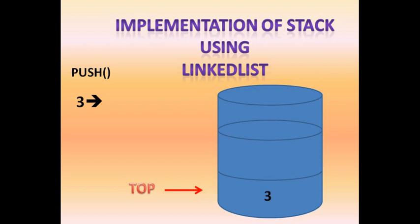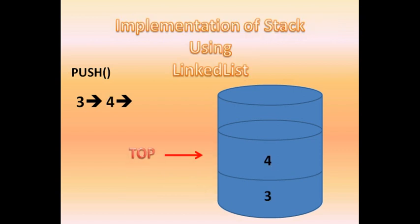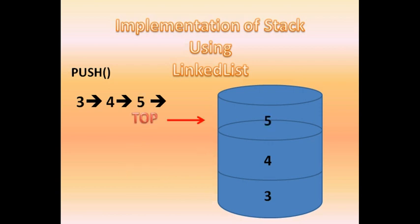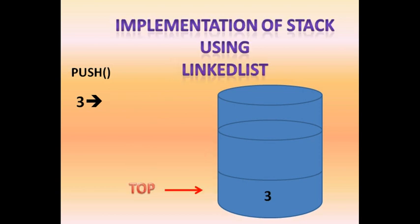The main operations performed on a stack are push and pop. When a stack is made, it is like a container. If a push operation is performed — say we push 3 — it goes to the bottom and the top points there. If we push 4, it goes above 3 and the top moves up. If we push 5, top comes to 5. With pop, the reverse happens: 5 is popped out, top drops to 4, then 4 is popped and top goes to 3.